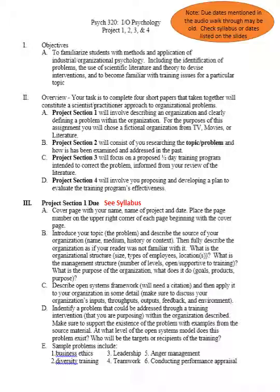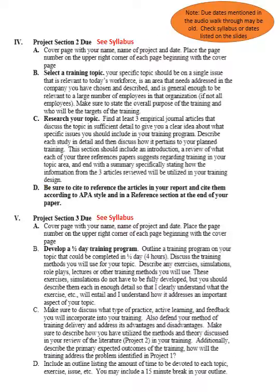Identify a problem that could be addressed through training and intervention within the organization. Support the existence of the problem with examples from the source material and identify at what level of the open systems model it exists. You don't need to discuss how you'll fix it yet, just identify it and provide examples. Sample problems include business ethics issues, cross-cultural or diversity training, leadership, teamwork, time management, performance evaluations, anger management, or workplace violence. Email me with your idea if you have questions.